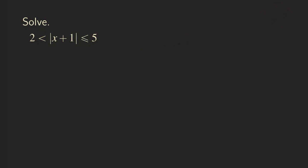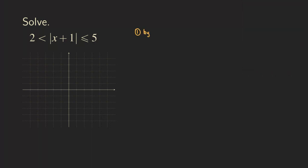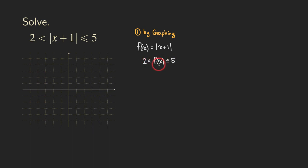One way is by graphing. I have the x-y plane right here. So I'm going to claim that the middle part is the function f(x) = |x + 1|. That's really just saying we want to find the x values so that 2 is less than f(x), and f(x) is less than or equal to 5 — meaning the function is between 2 and 5. We want to graph the function and see where its y values fall between 2 and 5.